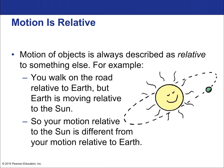So what does it mean that motion is relative? The motion of objects is always described as relative to something else. There's no such thing as absolute motion. For example, you walk on the road relative to Earth, but Earth is moving relative to the Sun. So if you have one speed relative to the road, say 2 or 3 miles per hour, you have a very different speed relative to the Sun — thousands of miles per hour.